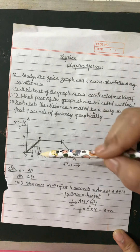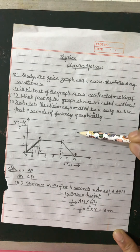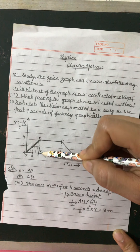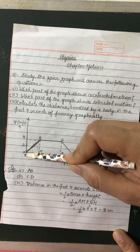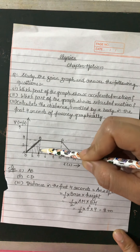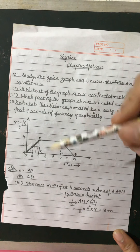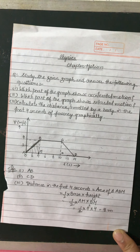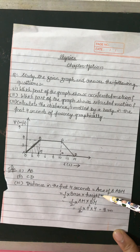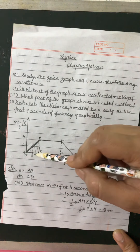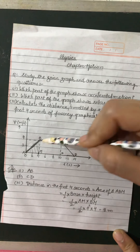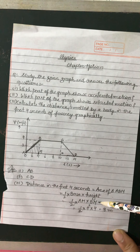To calculate the distance traveled in the first four seconds, we will calculate the area of triangle ABM. Distance in the first four seconds equals the area of triangle ABM. The area of a triangle is half into base into height. The base is AM and the height is BM.